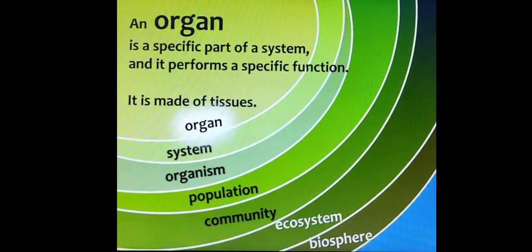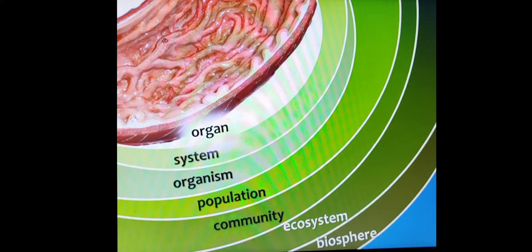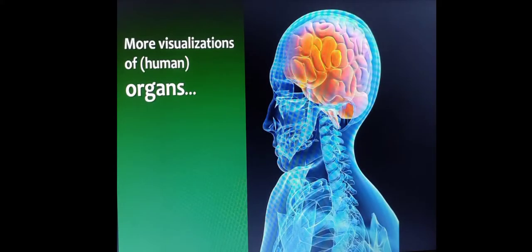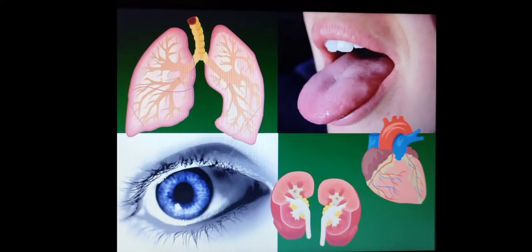Then organ. An organ is a specific part of a system. It is made up of many tissues. This is the stomach, a part of the digestive system. And an organ is made up of different tissues. This is the brain — a part of the nervous system. Our body is made up of different organs: tongue, heart, lungs, eyes — all different parts of different organ systems. These organs are made up of different tissues.